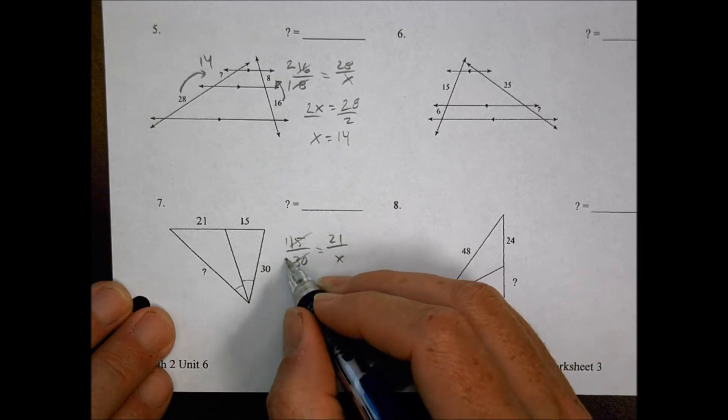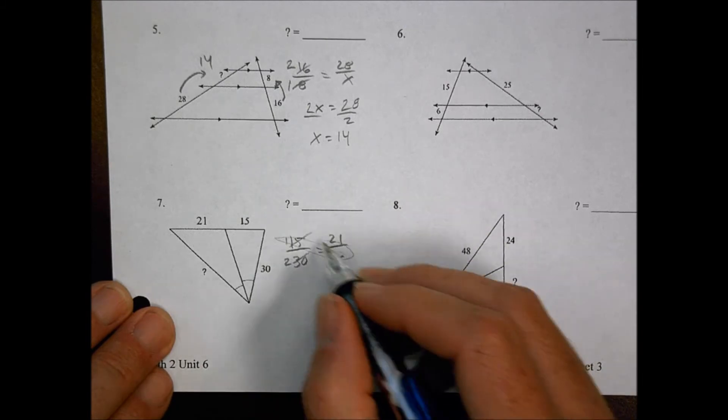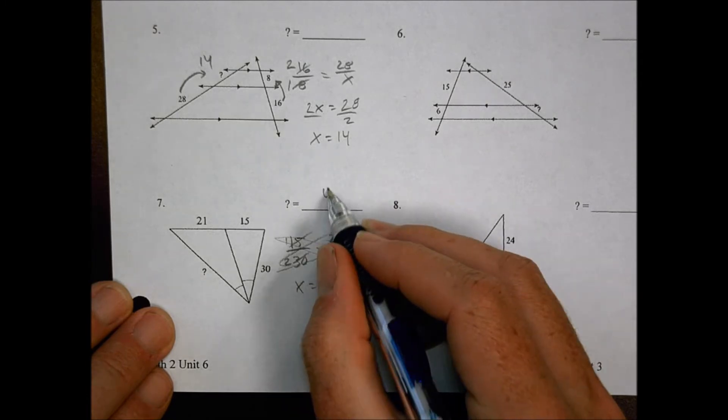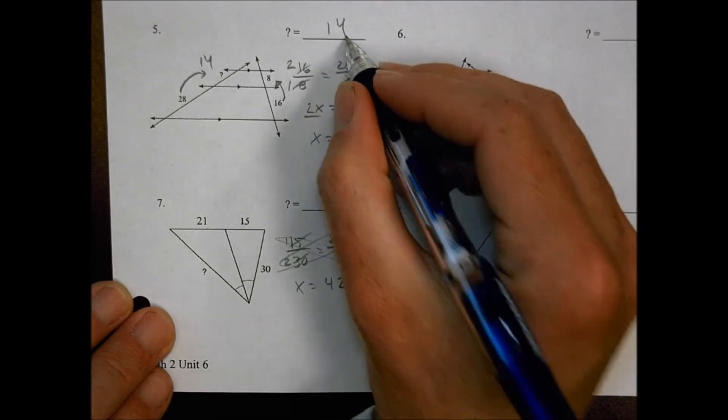Again, this reduces to 1 over 2, and so when I cross multiply, I end up with x equals 2 times 21, which is 42, and that's all there is to that one.